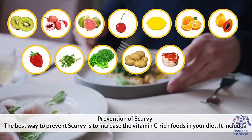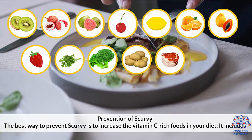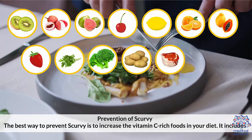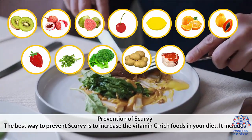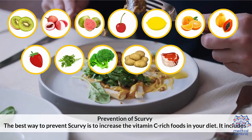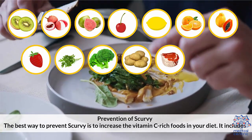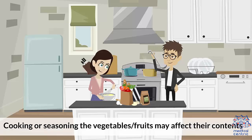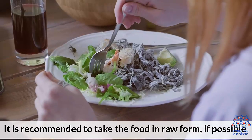Prevention of scurvy. The best way to prevent scurvy is to increase vitamin C-rich foods in your diet. These include kiwi fruit, lychee, guava, cherry, lemon, orange, papaya, strawberry, parsley, broccoli, potatoes, liver, and whale skin. Caution: vitamin C is a water-soluble vitamin, so cooking or seasoning vegetables and fruits may affect their nutrient content. It is recommended to take food in raw form if possible.